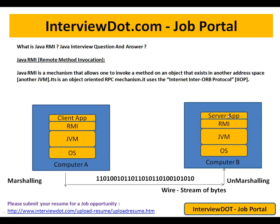It will try to find out the transfer method and invoke that particular method. This is how communication between two computers happens using Java Remote Method Invocation. Marshaling and unmarshaling are very important: marshaling means converting your object into a stream of bytes so it can travel through the wire, and unmarshaling is the opposite — converting from stream of bytes back into understandable objects.